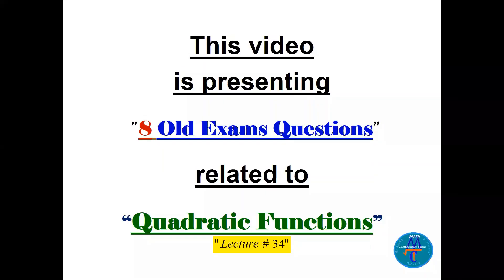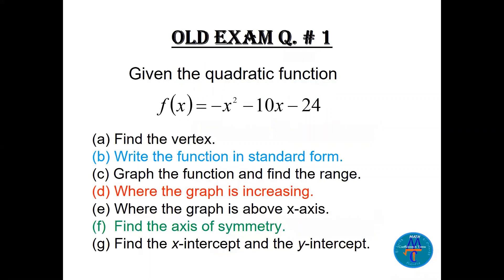This video presents eight old exam questions related to quadratic functions, which is algebra course lecture 34. Let's start directly. Question number one: given the quadratic function f(x) = -x² - 10x - 24, find all parts a, b, c, d, e, f, g. First, you have to find the vertex.